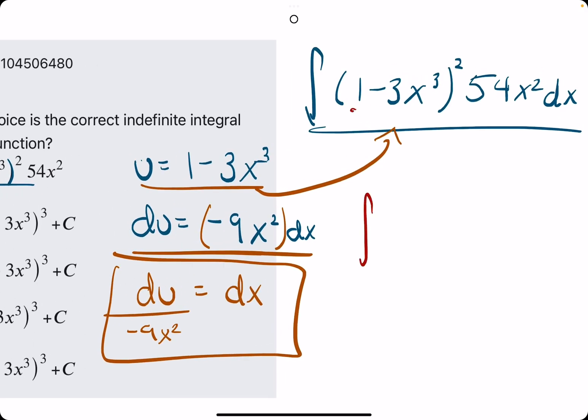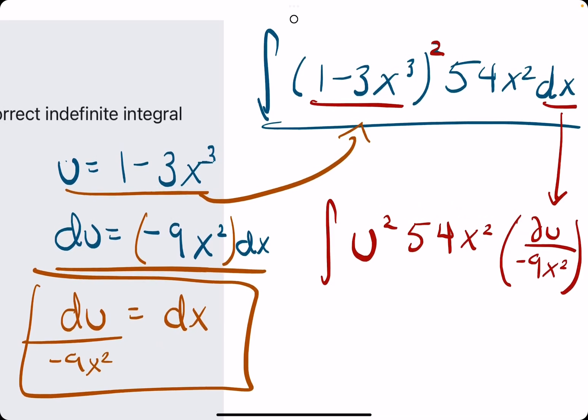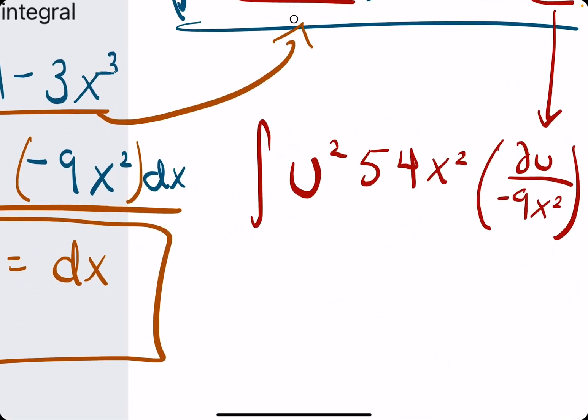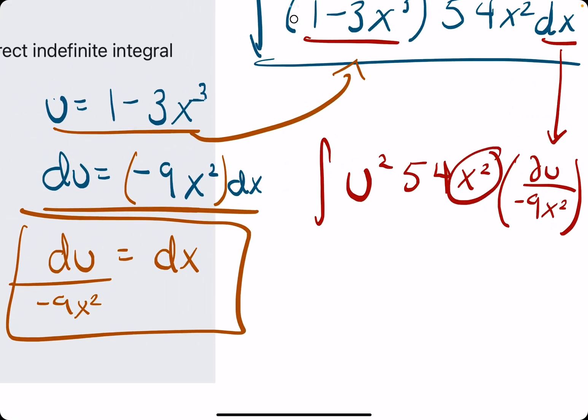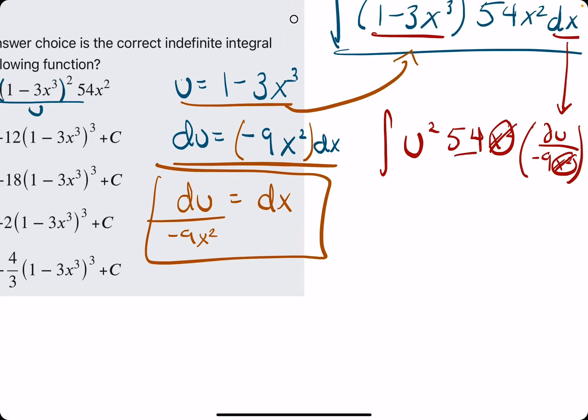Now we have something to plug in for u. We will plug in u for 1 minus 3x cubed, and in place of dx, we will plug in du over negative 9x squared. All of this is u, so we'll say u squared. We'll leave the 54x squared for the time being. Then, when we substitute in for our dx, we'll have du over negative 9x squared. The x squared will cancel with x squared, and 54 over negative 9 is negative 6.